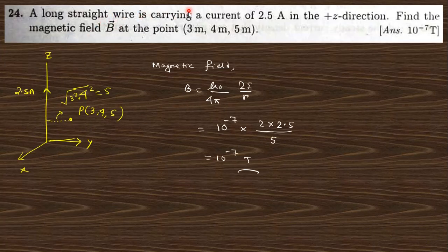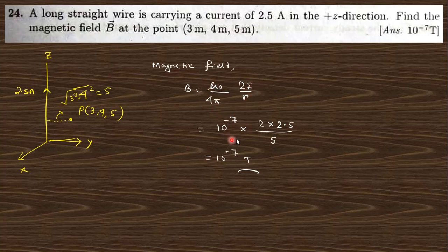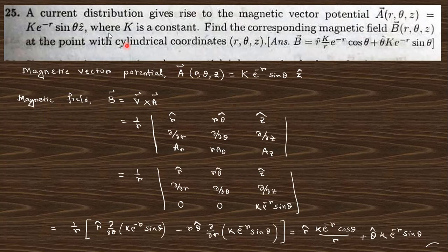Next: A long straight wire carries current 2.5 A in the z-direction. Find the magnetic field B at the point (3, 4, 5). The perpendicular distance from the z-axis is √(3² + 4²) = 5. Using B = (μ₀/4π)(2I/r), we get B = 10⁻⁷ × 2 × 2.5 / 5 = 10⁻⁷ tesla.